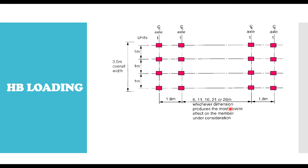To know which dimension to use, you analyze and look at the one that gives the adverse effects on the bridge. From experience, engineers have found out that a 6-meter difference between the second and the third axle actually gives the highest load effect. So we now have 1.8 meters at the start, 1.8 meters at the end, and the middle distance is 6 meters, because from experience this is what gives the most adverse effect.